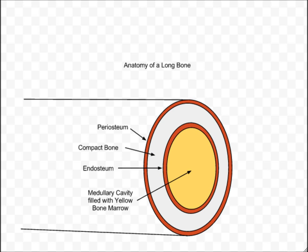The medullary cavity is filled with yellow bone marrow, which is composed primarily of fat cells. So the yellow bone marrow provides us with a means of energy storage.